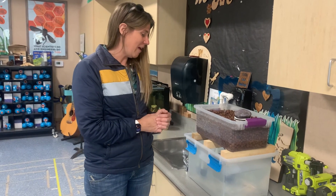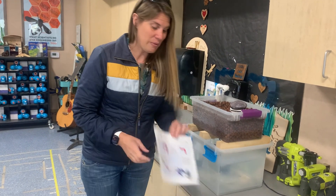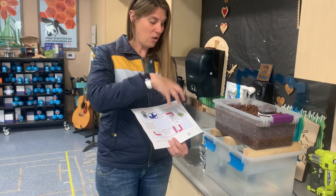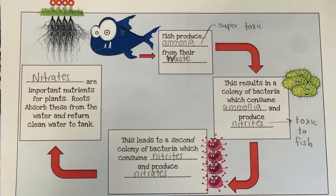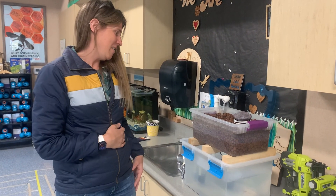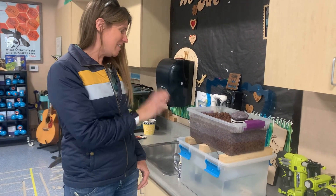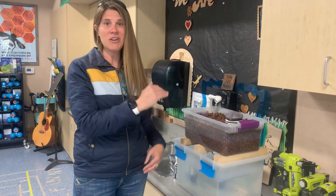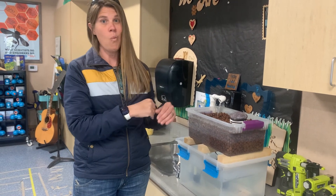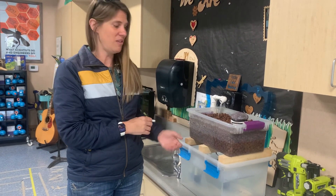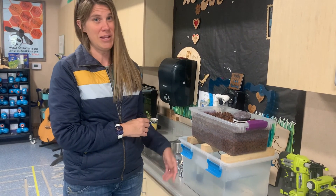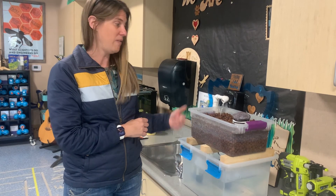The students learned about the different bacterial colonies that have to become established and then produce different types of nitrites and then nitrates in order for our plants to grow. The students are constantly monitoring water chemistry in order to make sure that they have levels that are appropriate to sustain both the fish life and the plant life.